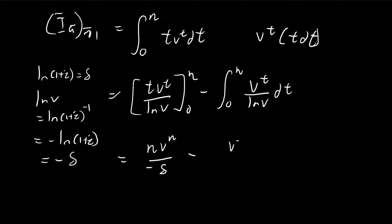And then here we do the integration again. So integrating v to the power of t is just v to the power of t divided by natural log v. And so substituting everything in, we get v to the power of n minus 1 over delta squared.